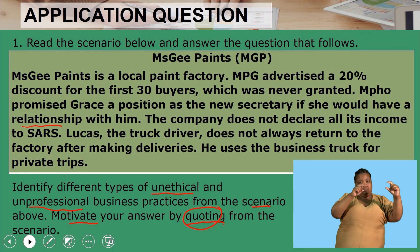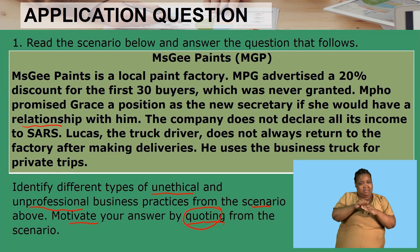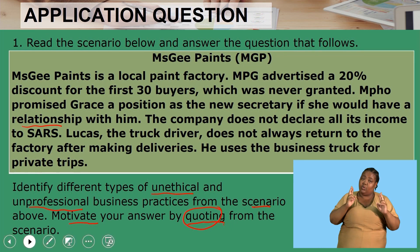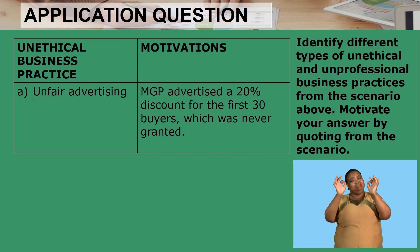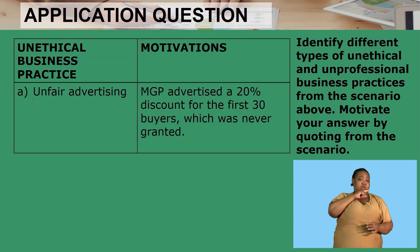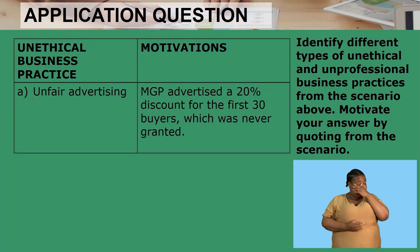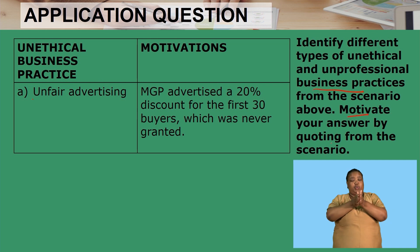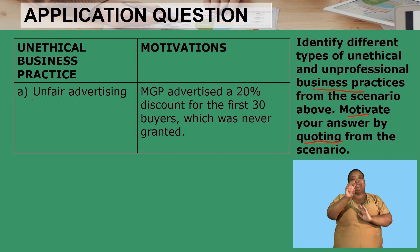The first unethical business practice is unfair advertising. Learners, please do not confuse false advertising with unfair advertising. The correct answer is unfair advertising — if you write false advertising, the answer will not be recognized. The quotation goes as follows: 'MGP advertised a 20% discount for the first 30 buyers, which was never granted.'